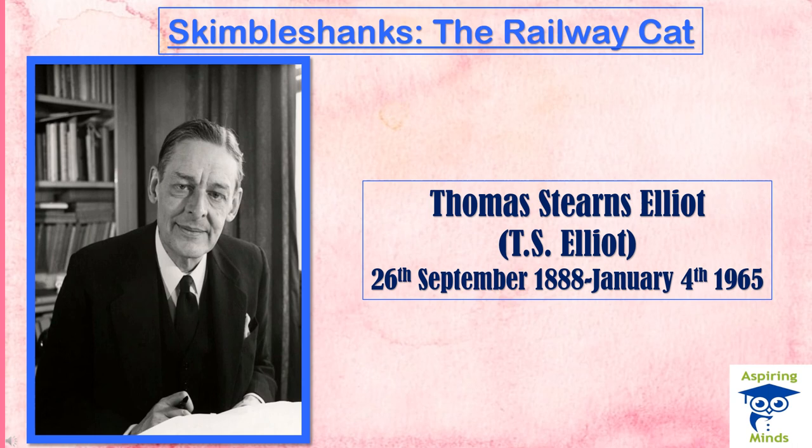This is not the first time T.S. Eliot is writing a poem on cats because he had a very close connection with cats during his childhood. This particular poem is a part of his collection Old Possum's Book of Practical Cats. It describes the life and duties of Skimble Shanks, a cat who resides on a train and takes care of various tasks. The poem showcases how Skimble Shanks is a very diligent and efficient cat, responsible for keeping the train in order and maintaining its smooth operation.